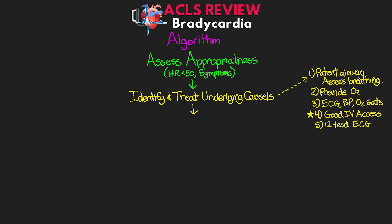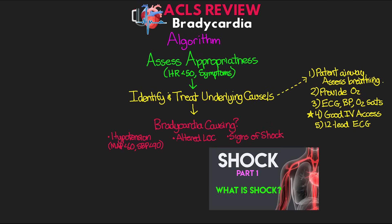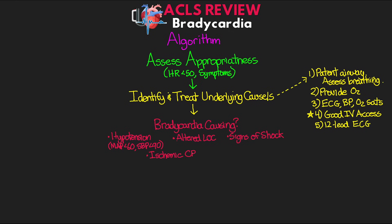Moving along in the algorithm, we want to assess our patient's persistent bradycardia and what impact it is having on their perfusion — often referred to as whether or not they are 'unstable.' Signs of instability include hypotension (MAP less than 60 or systolic blood pressure less than 90), altered level of consciousness from decreased perfusion to the head, signs of shock such as cool/clammy skin, pallor, cyanosis, rapid breathing, weakness, fatigue, nausea and vomiting, ischemic chest discomfort, or acute heart failure. If none of these are present, we continue to monitor; if any are present, we need to act and move through this algorithm.